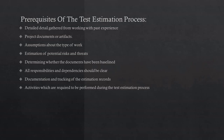Fourth is estimation of potential risks and threats — calculating the potential risks, threats, and pitfalls which may lie ahead for the team in the future. Fifth is determining whether documents have been baselined. The testing team needs to determine if the requirements have been baselined or not. If any requirement is released from the product owner, it should be verified with the end user. Otherwise, if the end user receives that product in an intermediate build, they will raise a point saying we did not give this type of requirement or we expected something else. If documents are not baselined, it is important to determine the frequency of the changes.